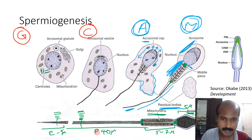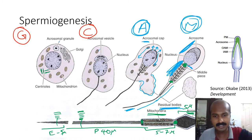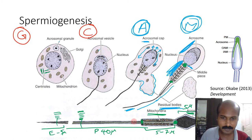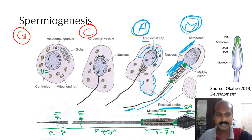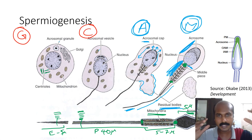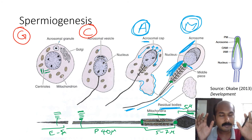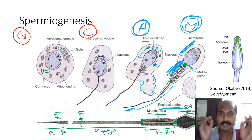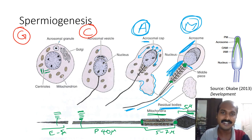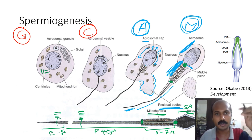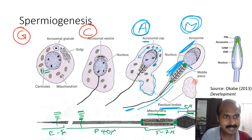The principal piece contains the axonemal complex (9+2 arrangement of microtubules) surrounded by a dense fibrous sheath; the end piece has only the axonemal complex. Functionally, the mitochondria provide energy and the flagellum creates movement, enabling the spermatozoon to travel from the testis through the harsh female genital tract and penetrate the corona radiata, zona pellucida, and vitelline membrane to fertilize the egg.